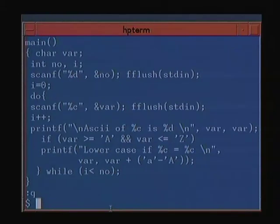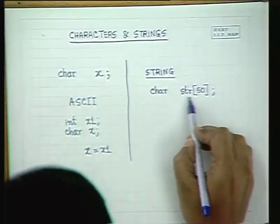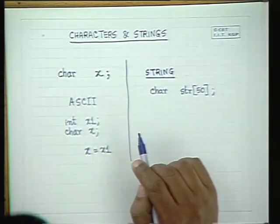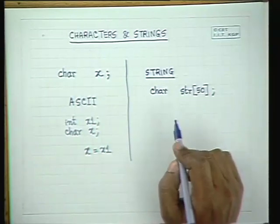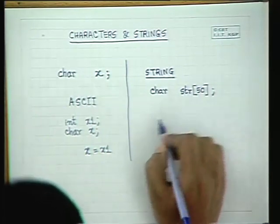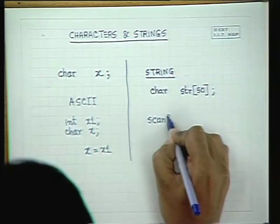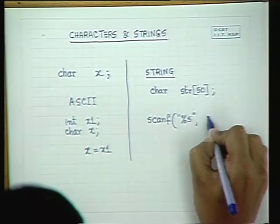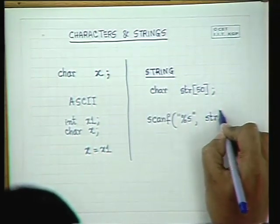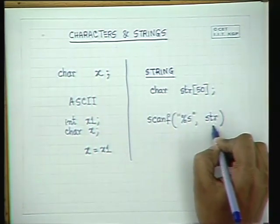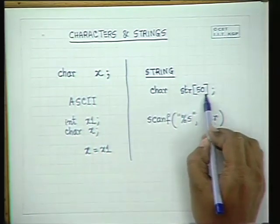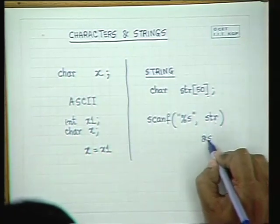Next we will tackle strings. As mentioned earlier, a string is a character array. You can define it as a character array and use it as a string. C provides certain facilities to directly read and write strings. If you want to read the string str, you give scanf with the %s format. In %s format you can read the string str, and you just give the name of the string.